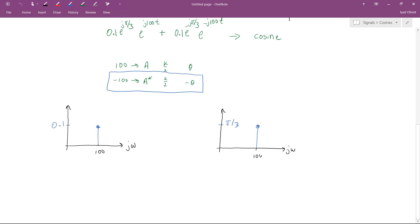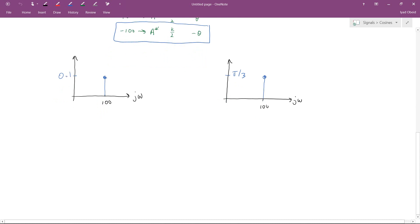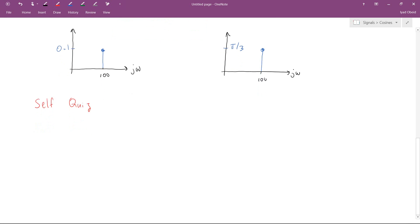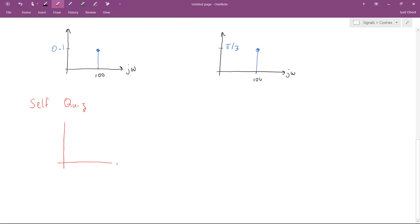All right, so now let's get to the self-quiz. Suppose I show you a magnitude plot that looks like this. So this is the magnitude and it will be 2 pi 25 with a magnitude of 0.1 and another term at 2 pi 75 with a magnitude that is double that. So let's say this is 0.5.